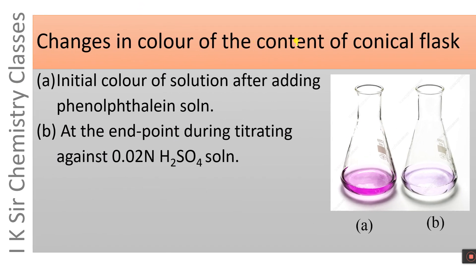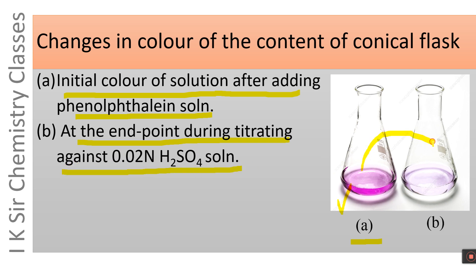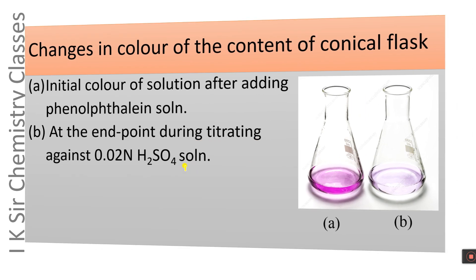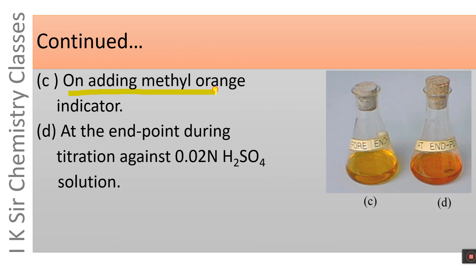Changes in color of the conical flask contents: after adding phenolphthalein solution to the alkaline water sample, it becomes pink colored. At the endpoint during titration against 0.02 N H2SO4 solution, the pink color disappears and the solution becomes almost colorless. Then on adding methyl orange to the conical flask, the color of the solution becomes yellow, and at the endpoint during titration, the yellow color transforms to orange.